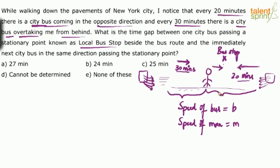When two bodies move in opposite directions, the relative speed is b plus m — and because the speed is greater, the time taken to cover the distance is less. When moving in the same direction, the relative speed is b minus m — the speed of the bus minus the speed of the man — so the time taken is more. That is why it takes 30 minutes from behind but only 20 minutes from the opposite direction.